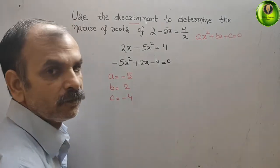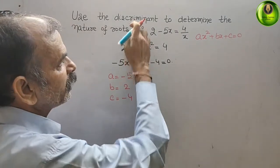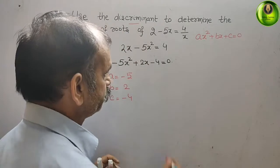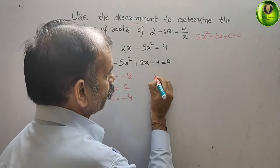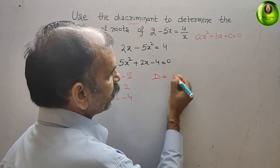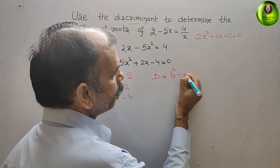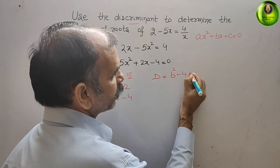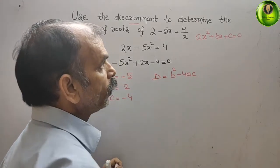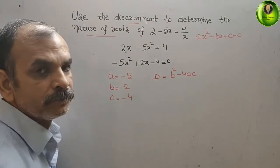Next, we go for the discriminant. The discriminant is nothing but b squared minus 4ac. Now we have to determine the nature of roots using this.